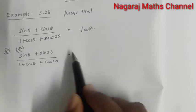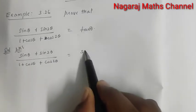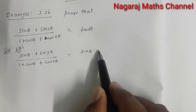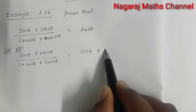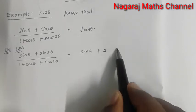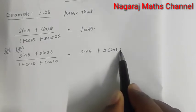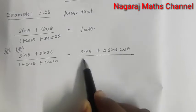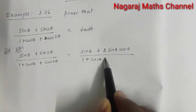LHS: in the numerator, sin θ plus sin 2θ — we expand sin 2θ as 2 sin θ cos θ. So the numerator becomes sin θ plus 2 sin θ cos θ, divided by 1 plus cos θ.